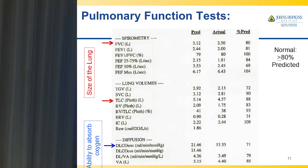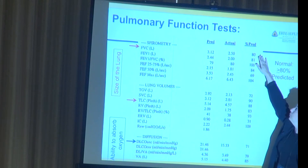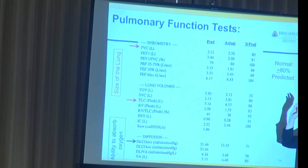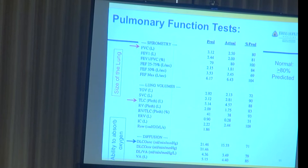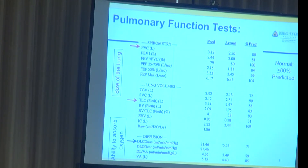The predicted value is based on your age, height, gender, and race. If it says you're six inches shorter than you actually are, you need to tell them to correct that because it will skew your predicted values. Then we look at the percent of predicted. Pulmonologists like to keep things simple — we use the same rules for all these numbers: greater than or equal to 80% is normal; 80 to 65 is mildly decreased; 65 to 50 is moderately decreased; below 50 is severely decreased.